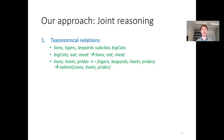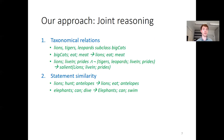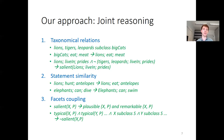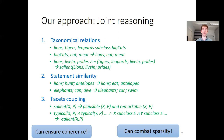We also exploit statement similarity. If lions hunt antelopes, it's sensible that they also eat them. Or if elephants can dive, they probably can also swim. And we couple the facets: if a statement is salient, it should be at least plausible and possibly also remarkable. If something is typical for several taxonomic siblings, it's less likely to be salient for any one of them. This way we can ensure coherence and combat sparsity.